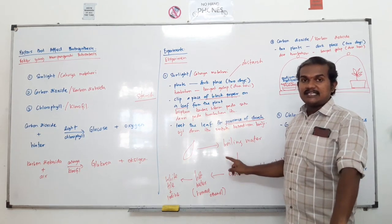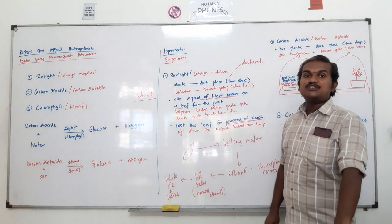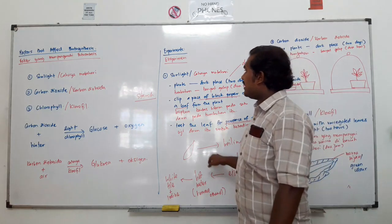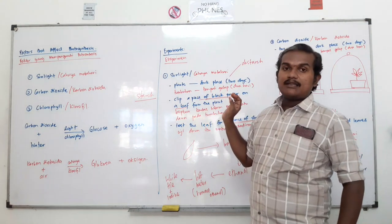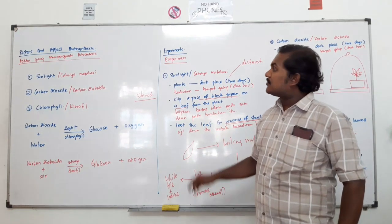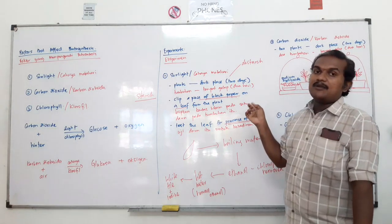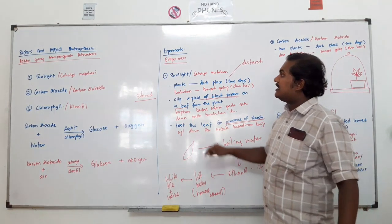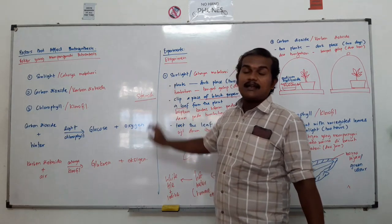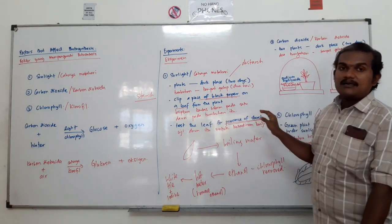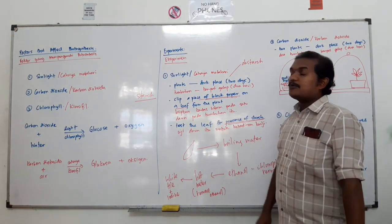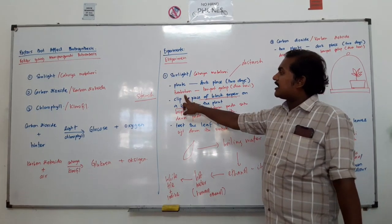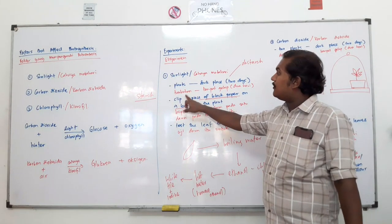If you take any other leaf that was not covered by the black paper and do the iodine test, you will get a positive result — a blue-black colour — confirming that starch is present. This shows that without sunlight, glucose is not made because photosynthesis is blocked, and no starch is stored. This experiment proves that cahaya matahari memang diperlukan untuk melakukan proses fotosintesis.